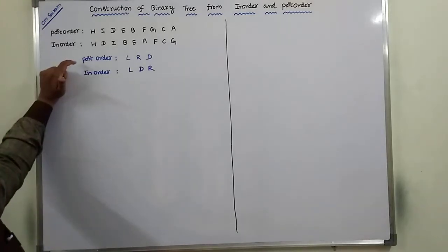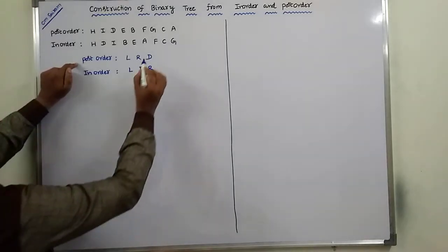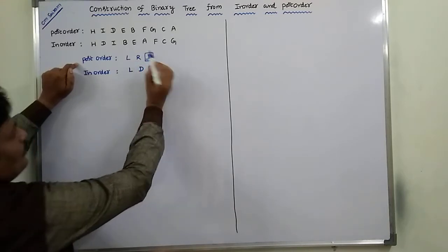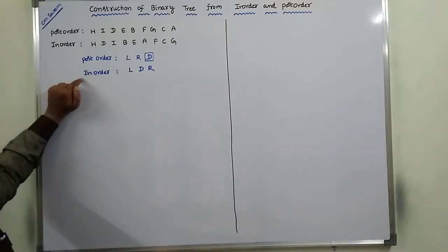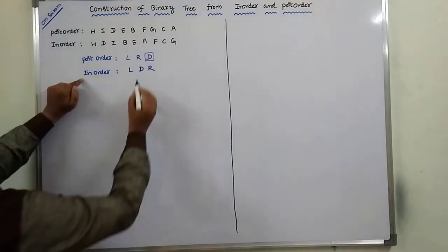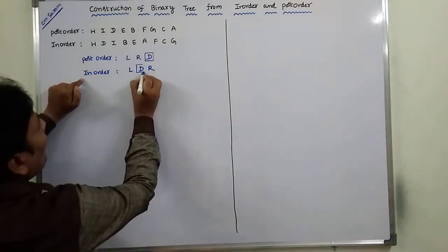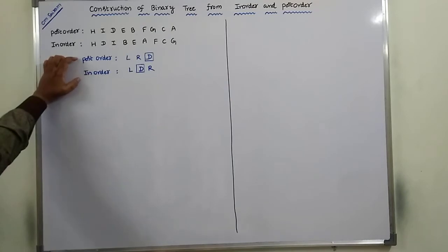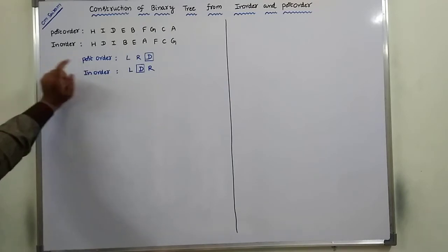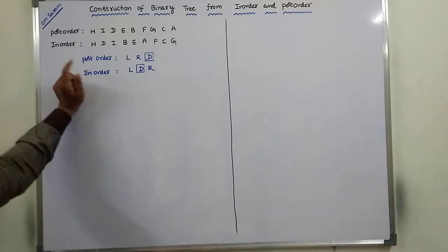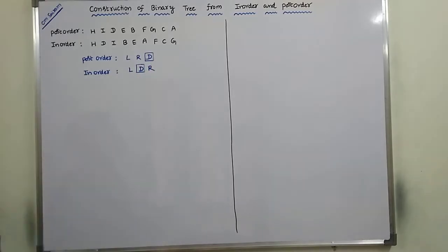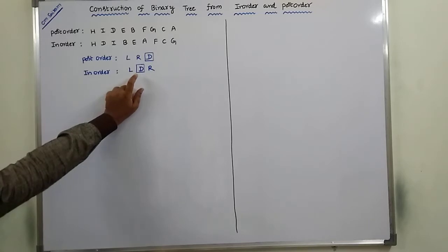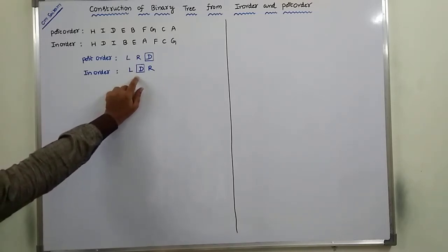In the case of post-order, the root node is at the last position. In the case of in-order, the root node is in the middle position. This is the key observation we have to make first.